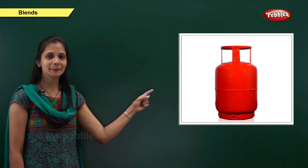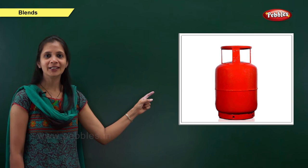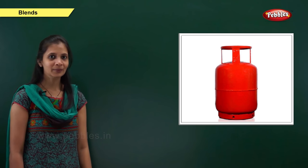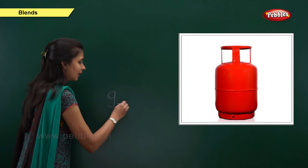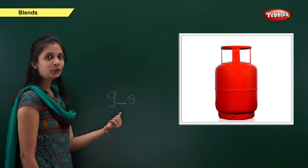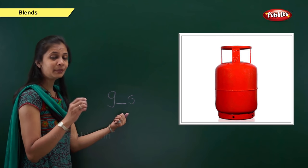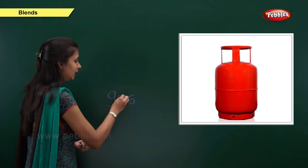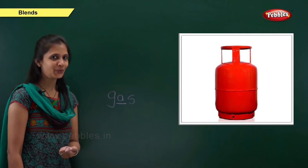Next one. Which picture is this? Yes, it is gas. What is the sound of this word? It is g, a, s. When the sound is 'g', the letter is g. When the sound is 's', the letter is s. What about the middle sound? G, a, s — the middle sound is 'a'. The letter is a. Vowel a. So: g, a, s — gas.